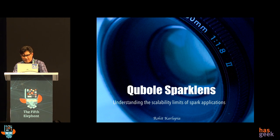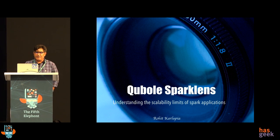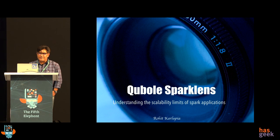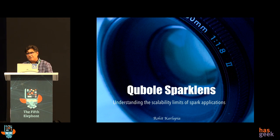One is, given a Spark application, how many executors do you really need? So if you add more executors, will your Spark job run faster, or you're just wasting compute and not really getting any value out of it?